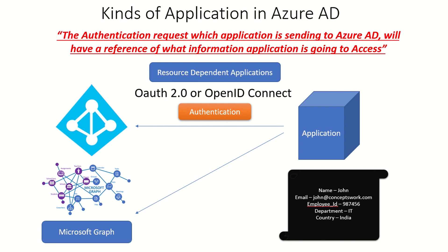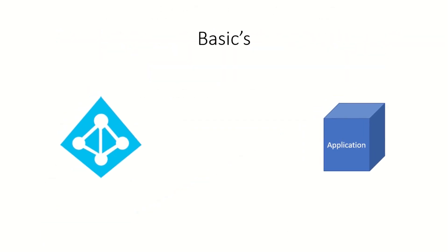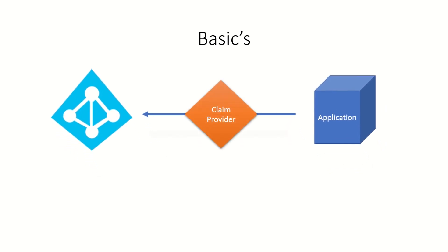So these are two different types of applications. The first is resource-oriented, where the resource belongs to the application vendor itself — you as the developer. The other is resource-dependent applications, where your application gets an authentication token but then accesses information that has been protected by Azure AD. Now let's take a step back and understand more basics, because this will be the entry point for our next video. Before your application can even send the first redirect request to Azure AD, a specific tenant of Azure AD must be added on your side as a claim provider.